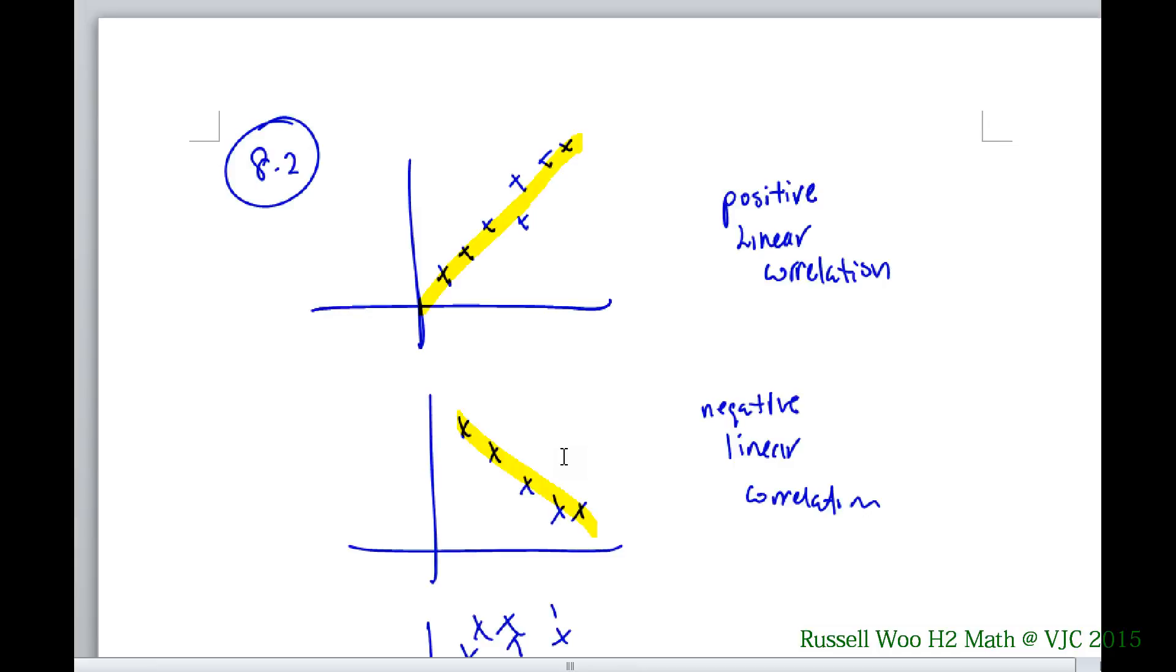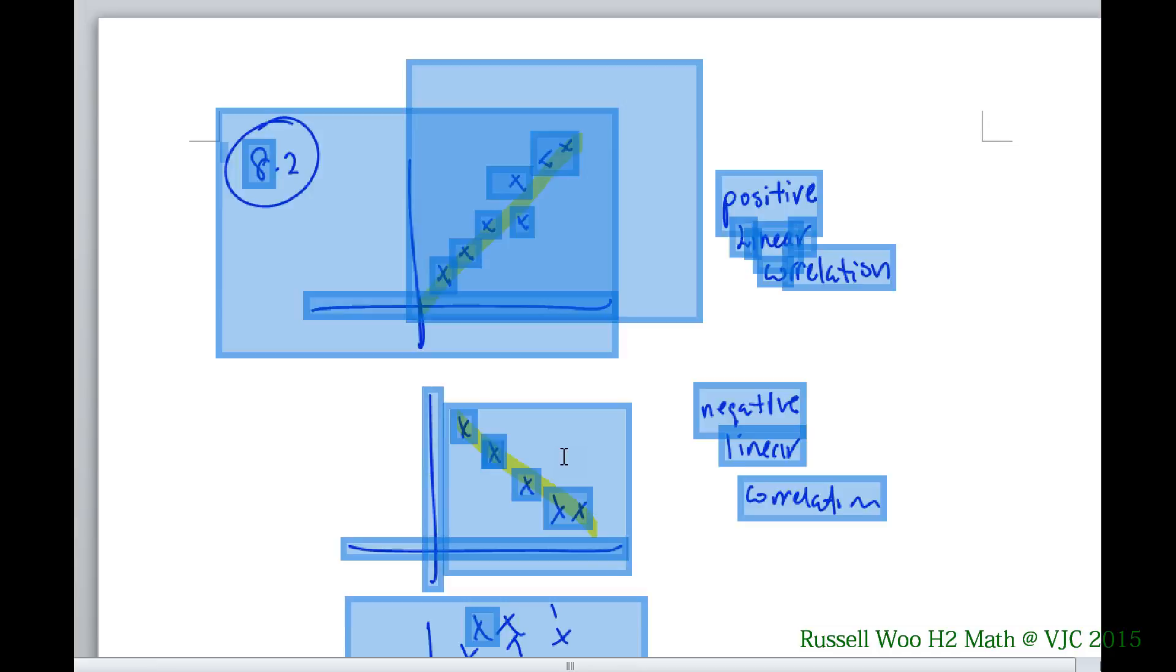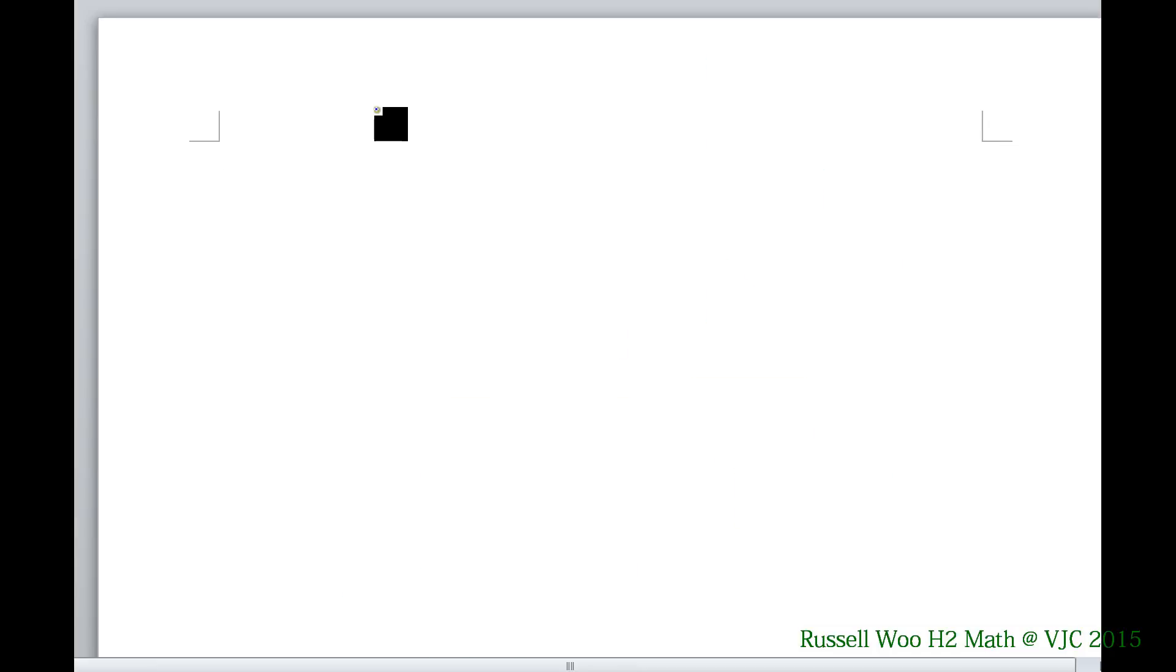You can have this kind of correlation, or you can have this kind of correlation. In general, you think, okay, this one is positively correlated, but this one is generally upwards but not that nice. You follow what I'm saying? There is this quantity called...